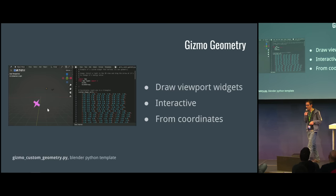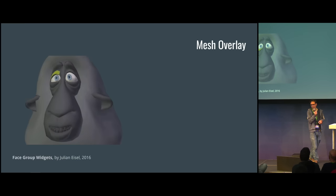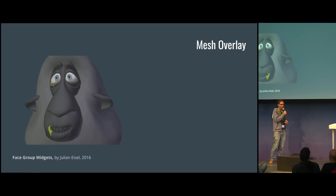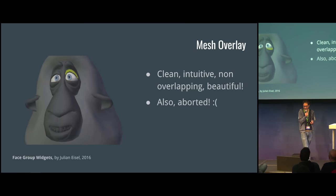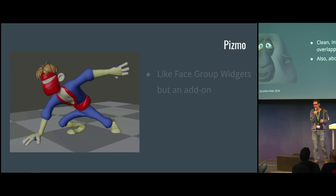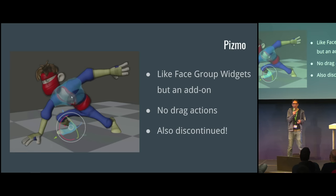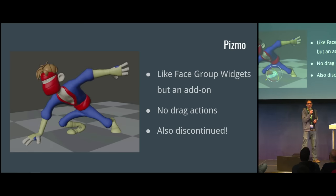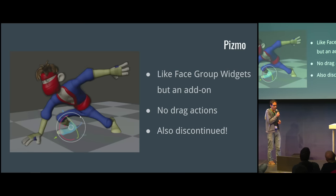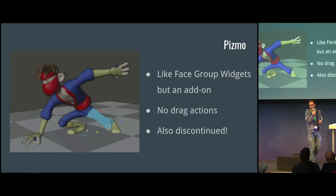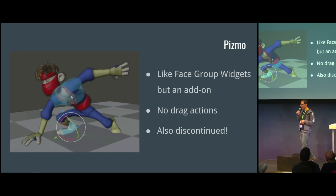With that in mind, I thought I could do something similar to an old proposal. Anybody remember this? This is from the Gooseberry project. We got very excited when we saw those wonderful widgets — we were so happy and couldn't wait to use them. Sadly, those were never made into production. So I tried to build something similar in Python with moderate success. This is an add-on I called Pizmo. It displays these overlaying widgets rather than curve shapes, and I could use them to select controls on the character, but no action was implemented.